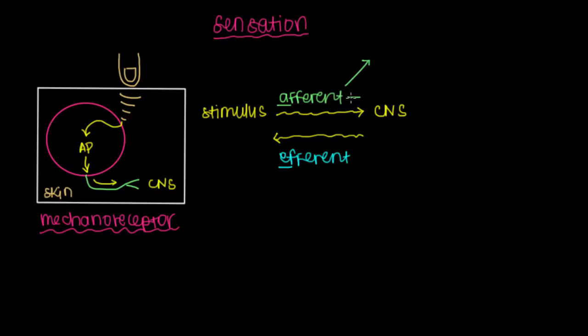And there are two main afferent fibers we talk about. There are A-beta fibers and A-delta fibers. A-delta fibers are used to perceive pain and temperature. The A-beta fibers perceive everything else. So these are going to be the afferent fibers we talk about for all the mechanoreceptors in this video.